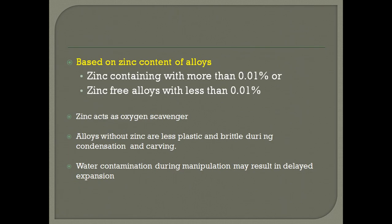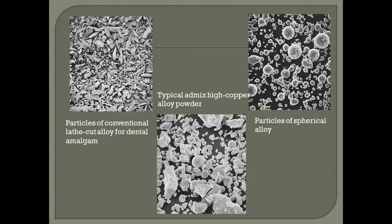Based on the zinc content, the amalgam alloys can also be divided into two types: zinc-containing alloys which contain greater than 0.01% zinc, and zinc-free alloys which contain less than 0.01% zinc. The role of zinc is it acts as a deoxidizer and makes the amalgam restoration plastic, and manipulation ability is improved. But in the absence of zinc, the plastic nature decreases and it becomes brittle, which makes condensation and carving difficult.